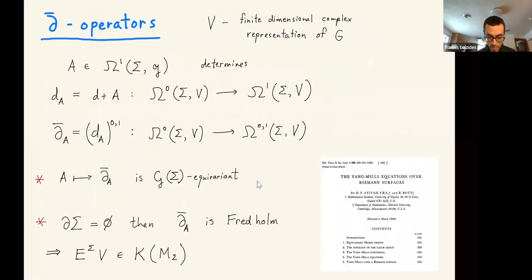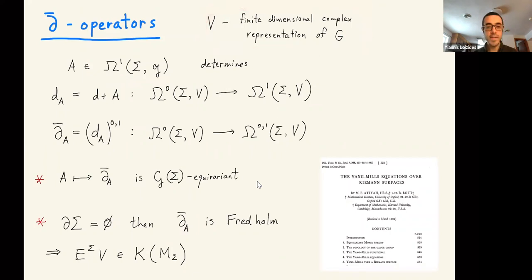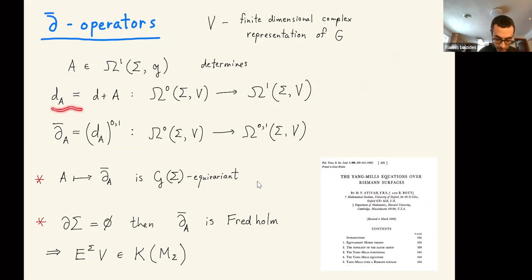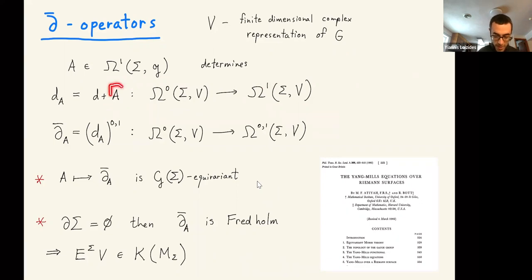Here's the moduli space M_sigma. We look at all Lie algebra-valued 1-forms on the surface, which you should think of as a connection on the trivial G-bundle sigma cross G. We look at connections whose curvature is zero — that's some infinite-dimensional space — and then divide out by the action of the gauge group G_sigma, which is just maps from sigma into G. The gauge group acts on this space in the usual way and you form the quotient.